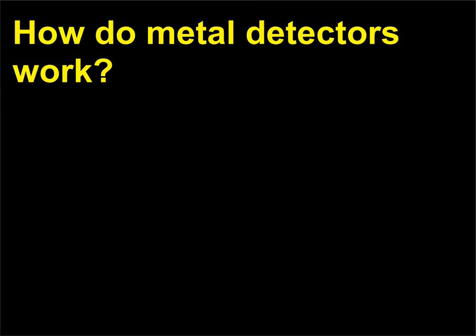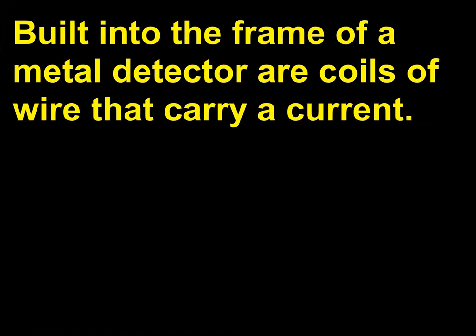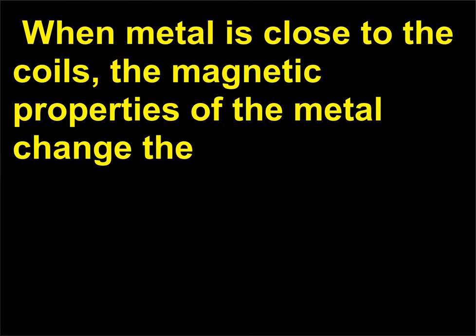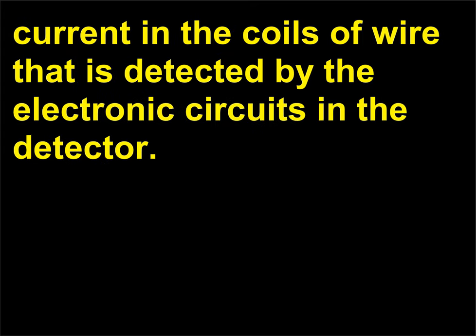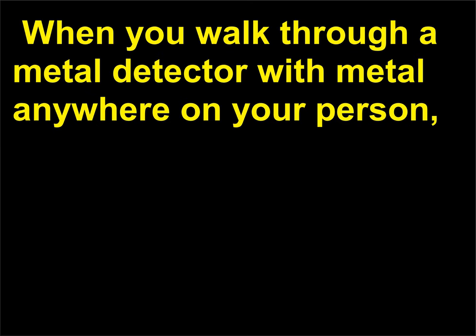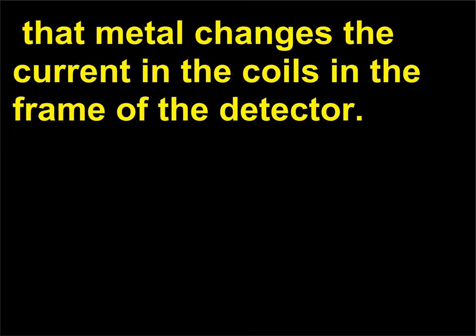How do metal detectors work? Built into the frame of a metal detector are coils of wire that carry a current. When metal is close to the coils, the magnetic properties of the metal change the current in the coils of wire, which is detected by the electronic circuits in the detector. When you walk through a metal detector with metal anywhere on your person, that metal changes the current in the coils in the frame of the detector.